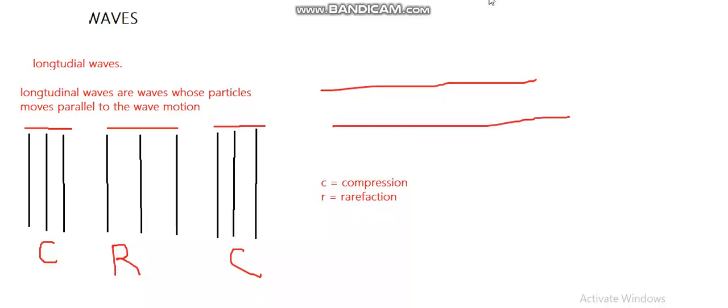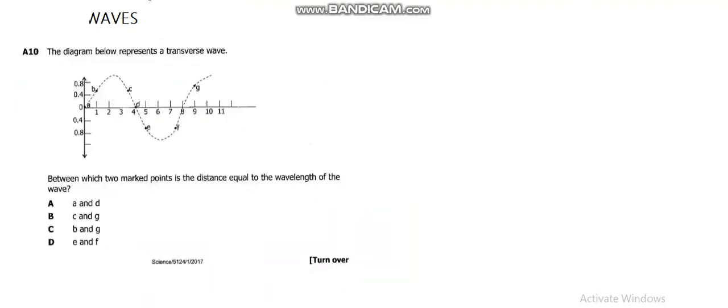The question says the diagram below represents a transverse wave. Between which two marked points is the distance equal to the wavelength of the wave? We look at the wavelength. If I have a wave like this, it can be the distance from there to there.